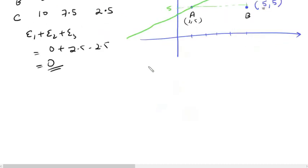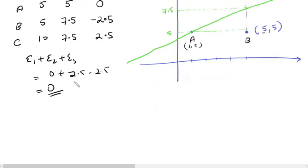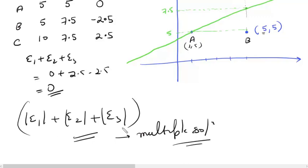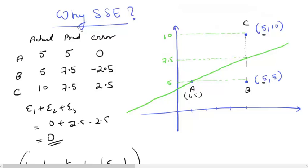Some of you may ask: why not take the absolute value instead? Why not minimize |e1| + |e2| + |e3|? The answer is that if we minimize the sum of absolute errors, we might get multiple solutions — two different lines giving the same value of sum of absolute errors — and we'd be confused about which one to select. But minimizing the sum of squared errors always gives exactly one line as the solution.